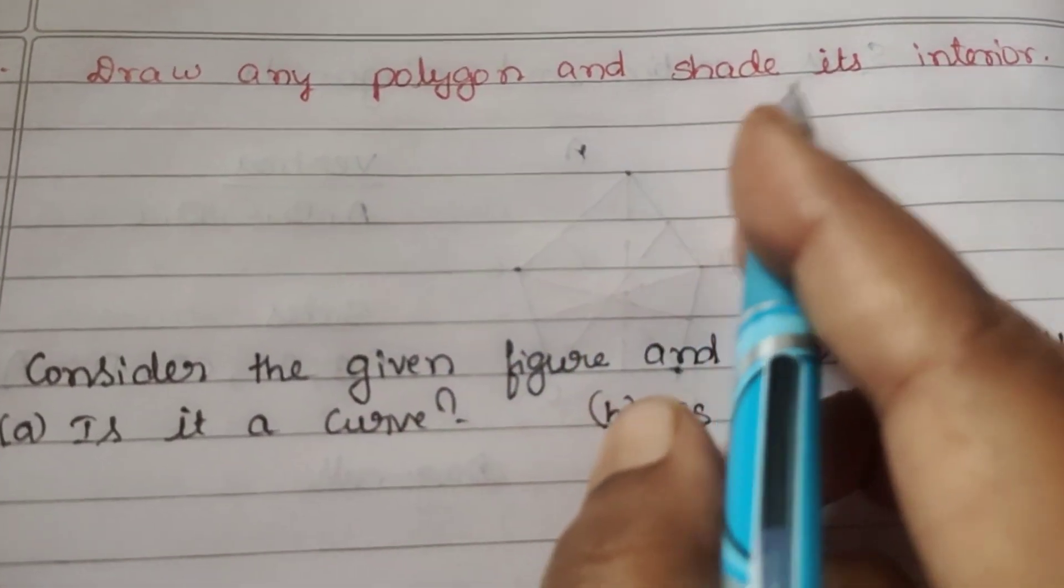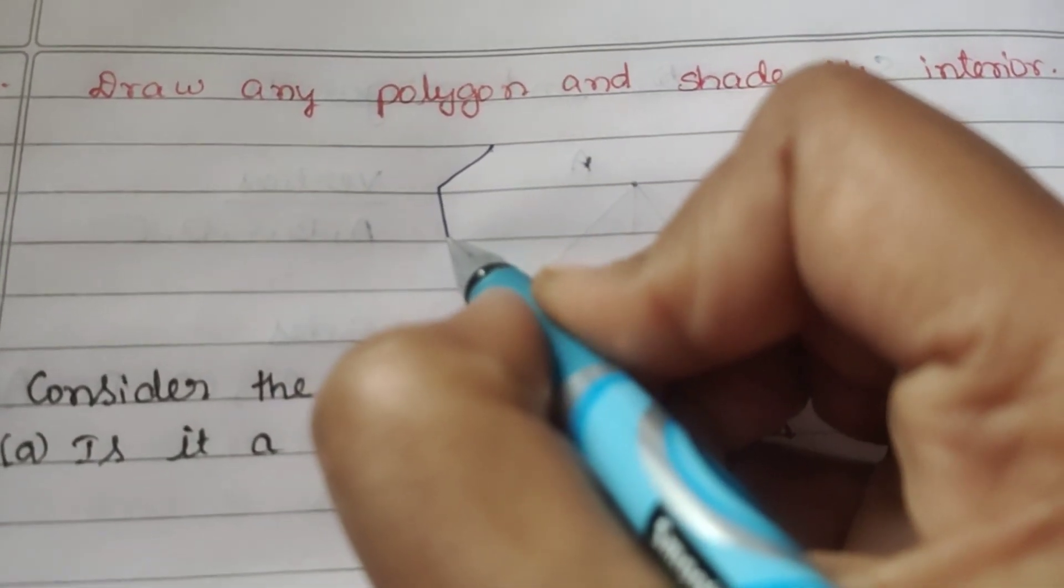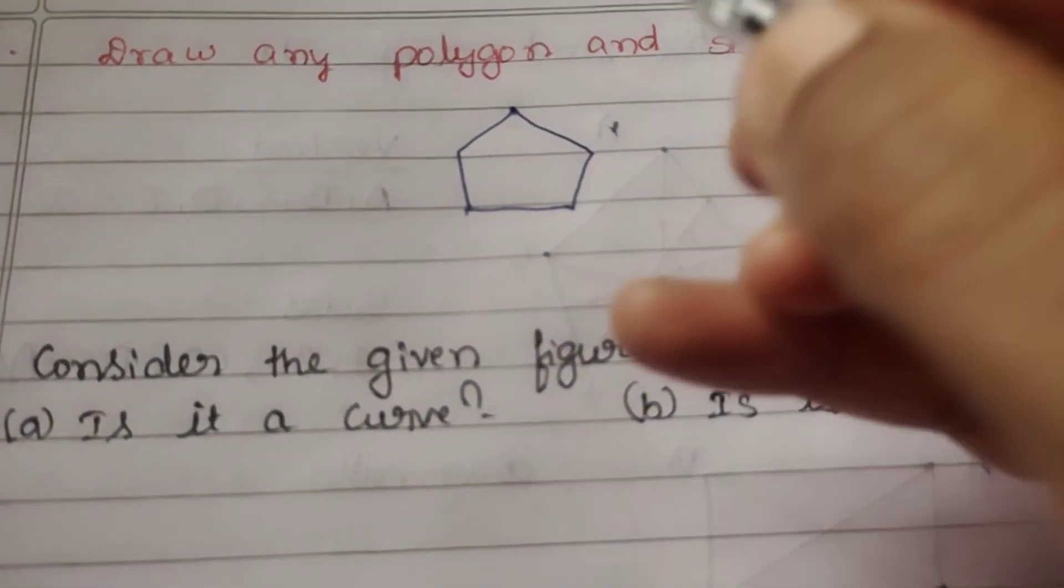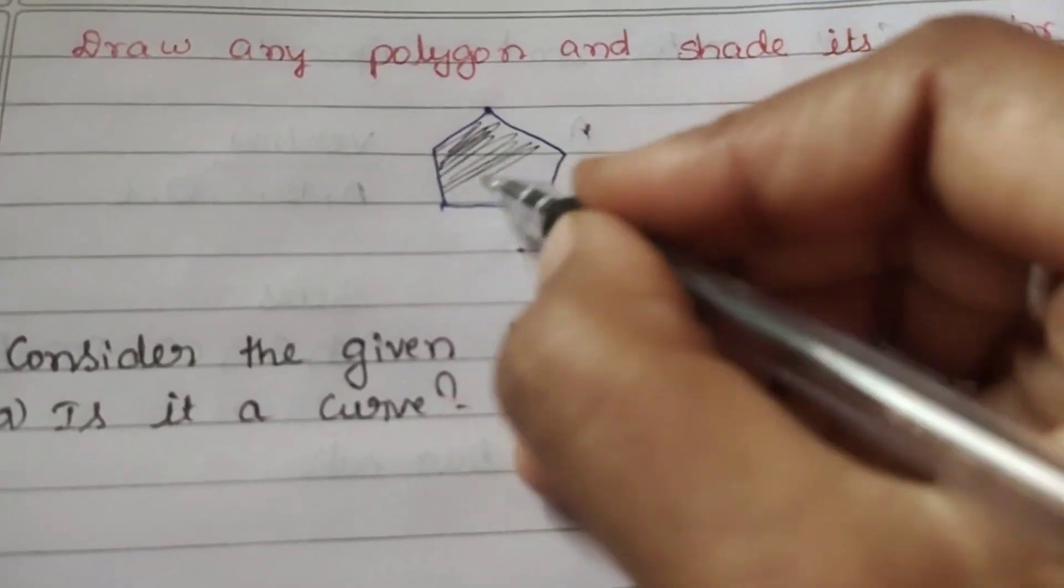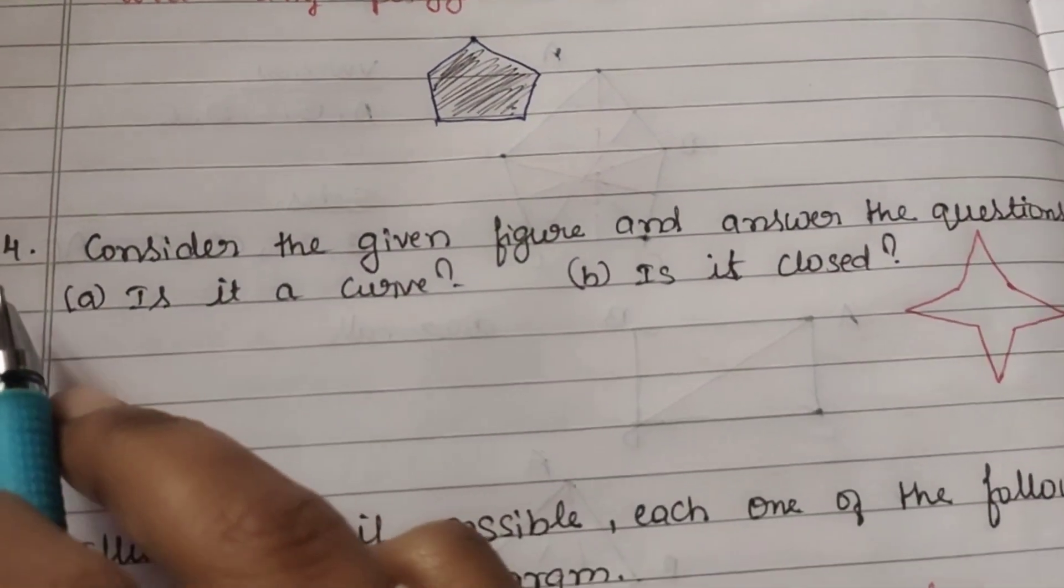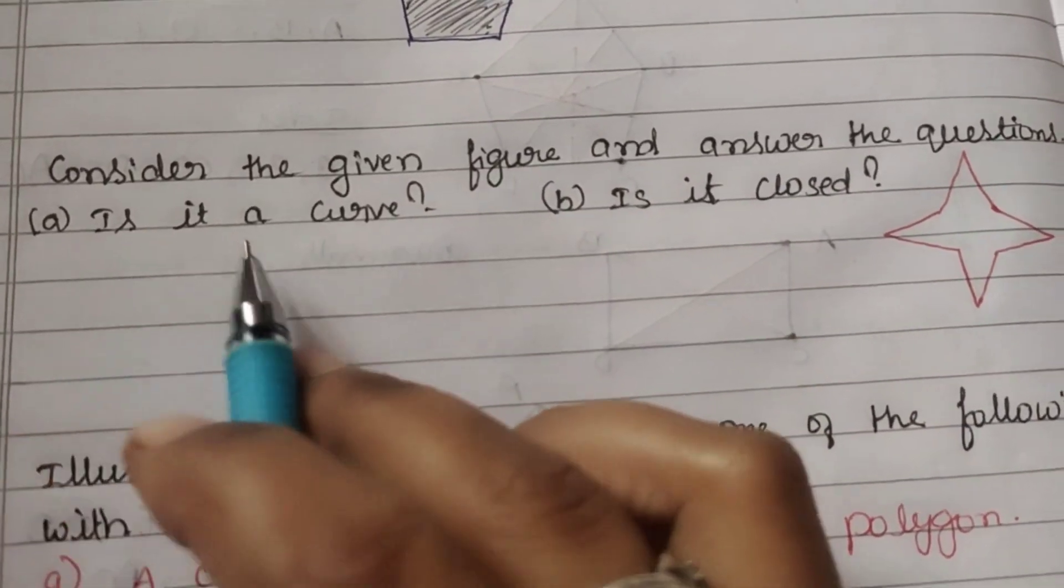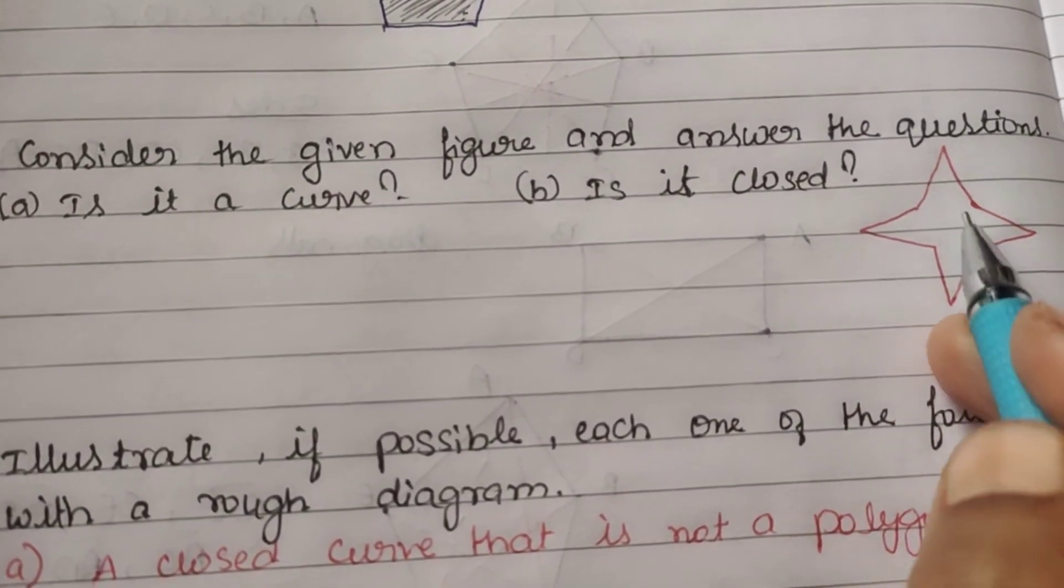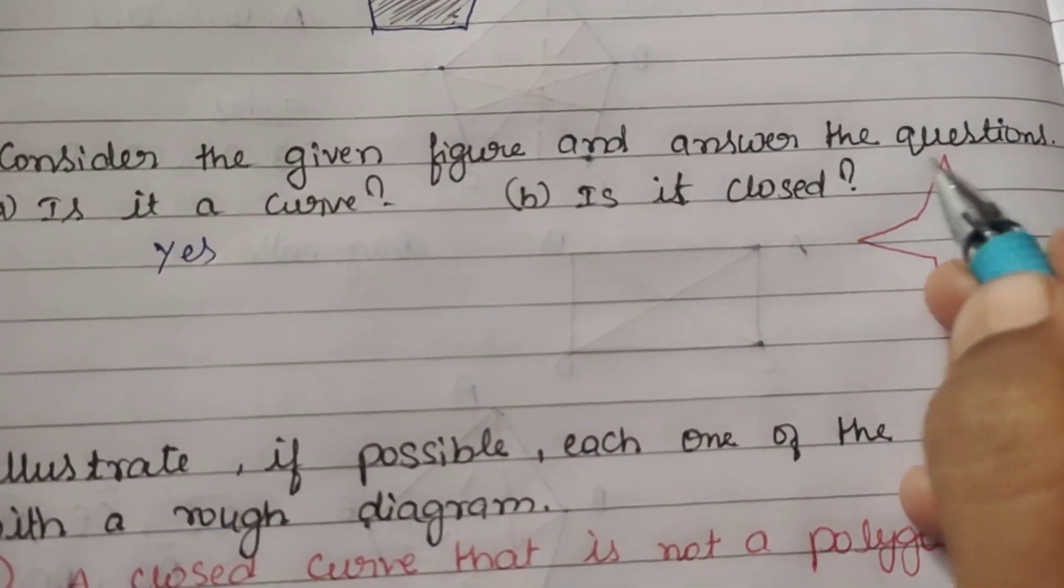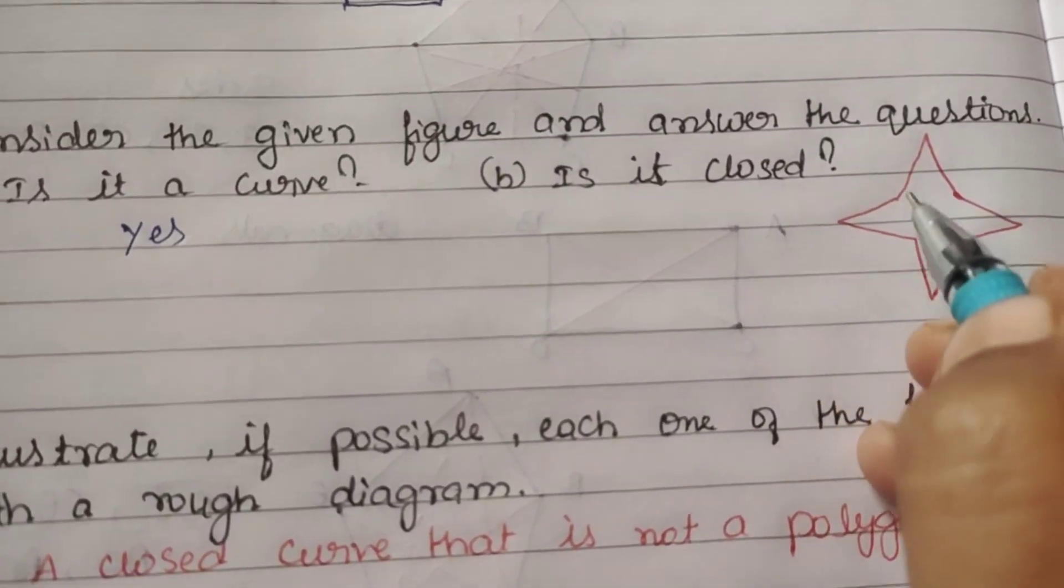Fourth question: Consider the given figure and answer the questions. Is it a curve? Yes. Is it closed? Check if the figure has starting point and ending point meeting. Yes, this is closed.